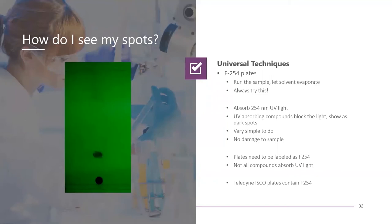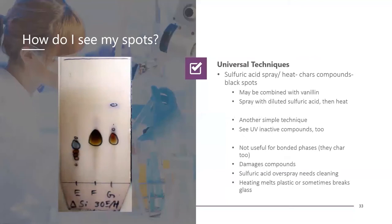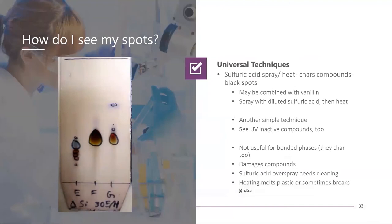Compounds that show spots absorb UV light, so they can be detected and fractionated with the UV detector in the flash system — if you can see a spot, your UV detector can also see the compound. Since some compounds don't absorb UV light, other techniques can be used. Sulfuric acid spray is another universal technique: after spraying, when a plate is heated, the compounds are charred to black spots, which destroys the compound. This matters for preparative TLC if you need to reuse the compounds. It works on compounds invisible to UV, though overspray can damage other things and cleanup is difficult.